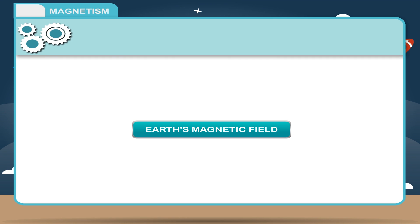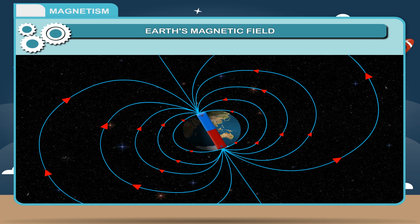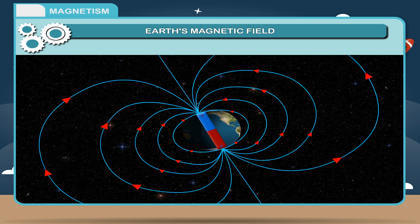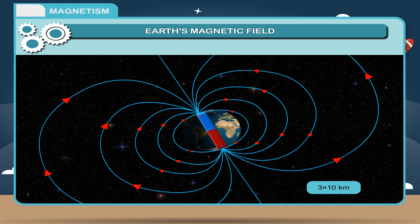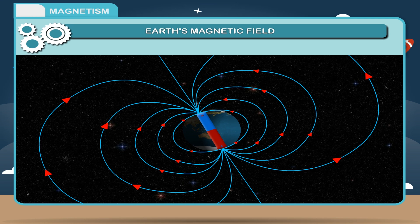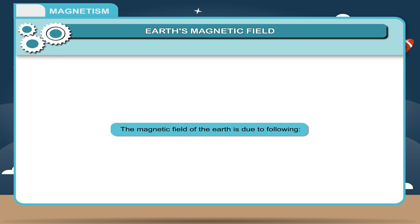Earth's magnetic field: The earth behaves as a huge bar magnet as regards its magnetic field on the surface of the earth and up to a height of about 3 into 10 raised to the power 4 kilometers. However, there appears to be no collection of magnetized solid mass in the interior of the earth. The magnetic field of the earth is due to following.